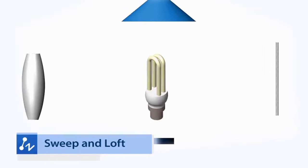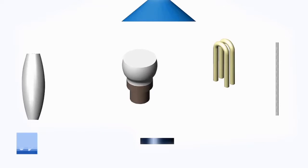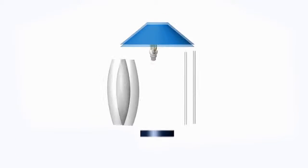Sweep and Loft enables Brian to transform 2D models into 3D easily. Simply draft a cross-section, or set an intersection, and Sweep and Loft will do the rest.